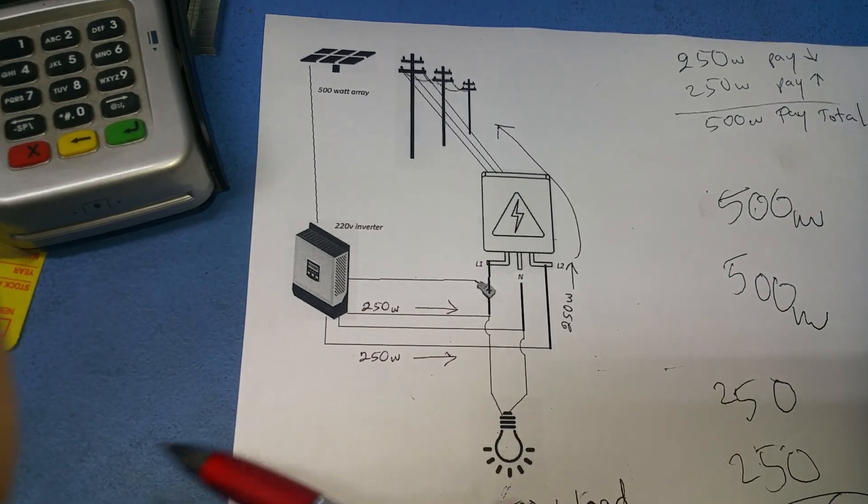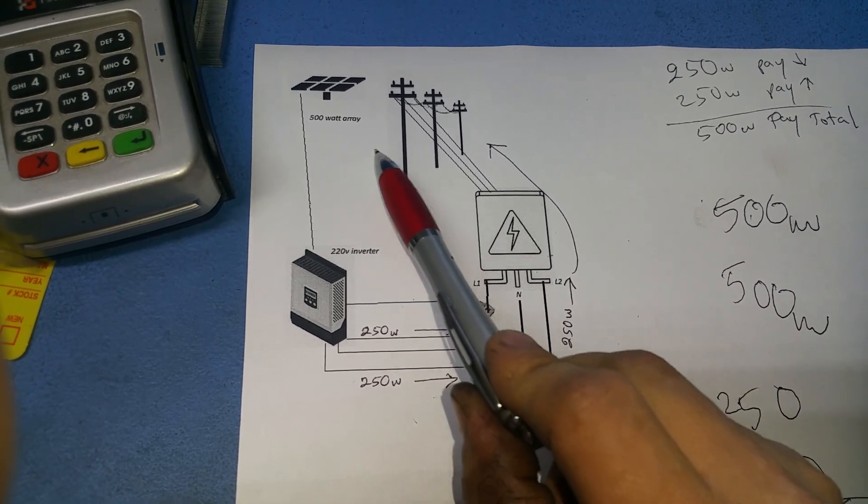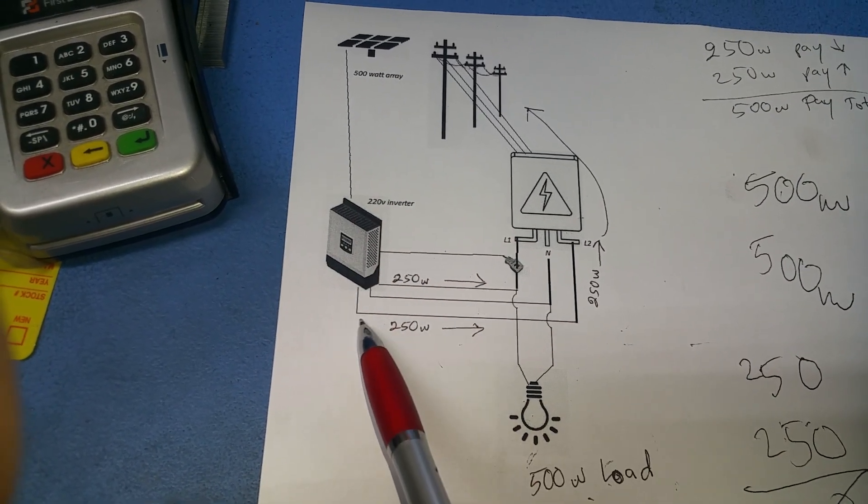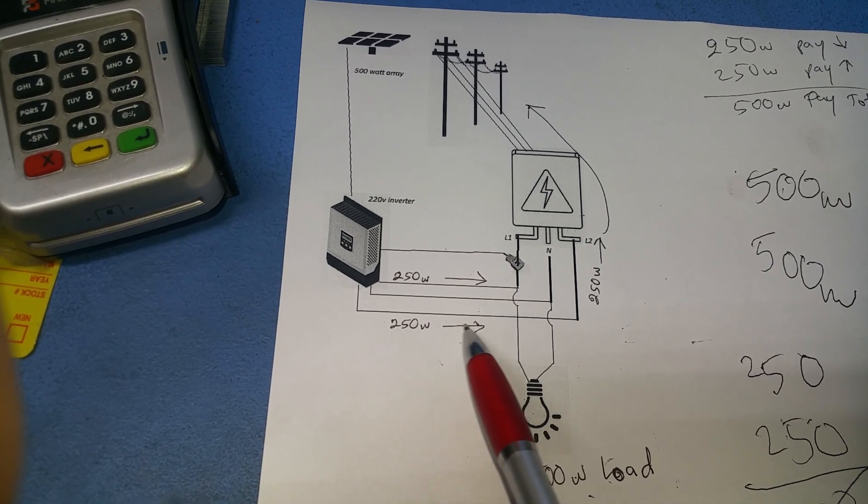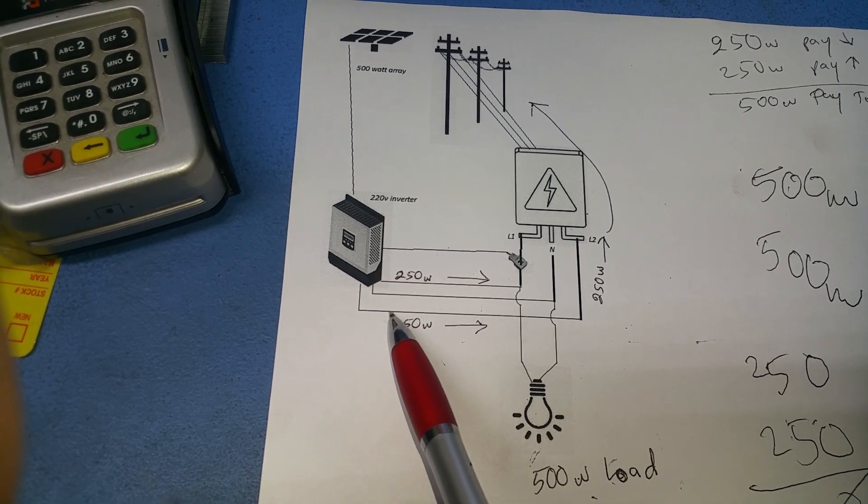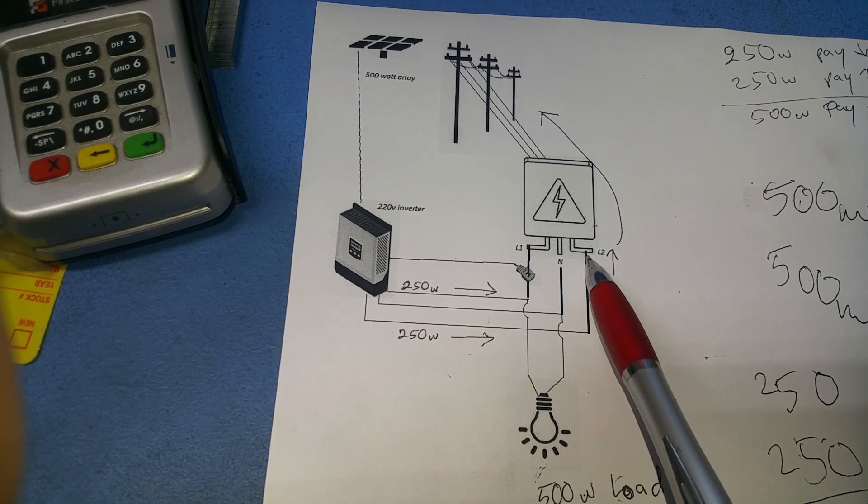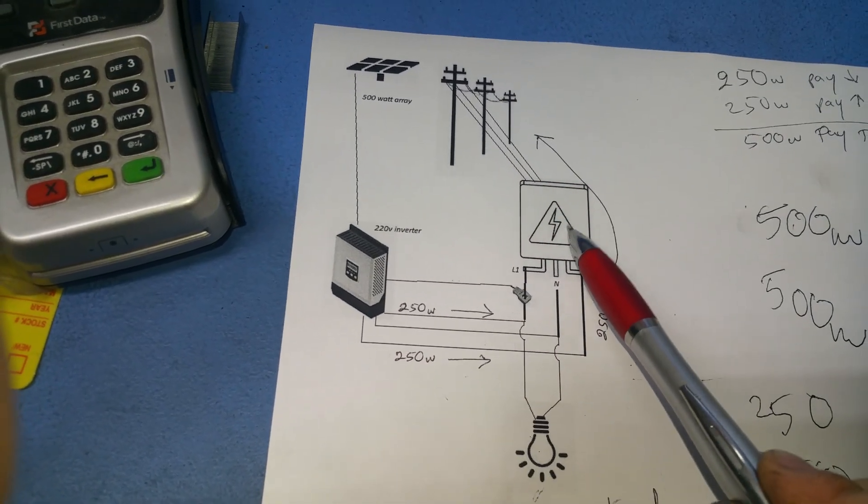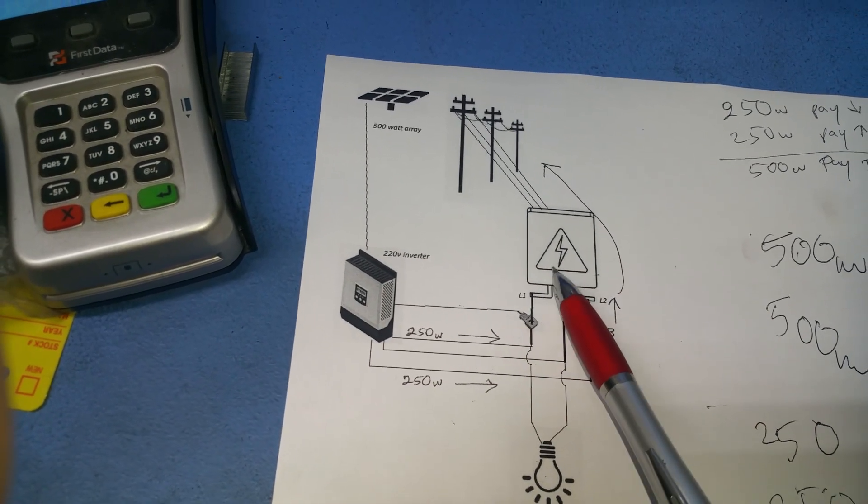However, what happens on the L2 leg? The inverter put out 250 watts on the L2 leg, and because there's no load on L2, this 250 watts actually feeds back to the grid. Because I don't have net metering, they will charge me for putting power back into the grid.